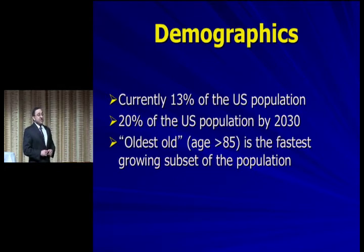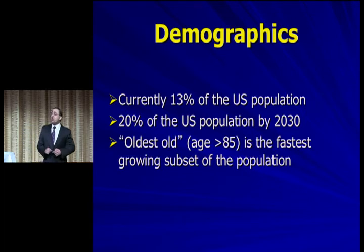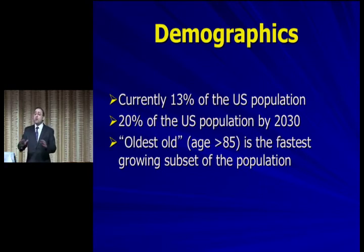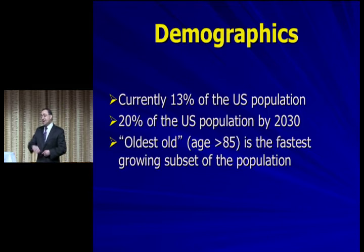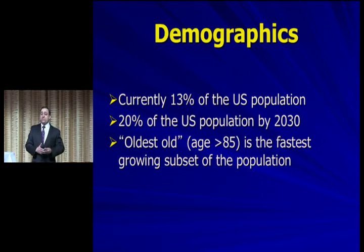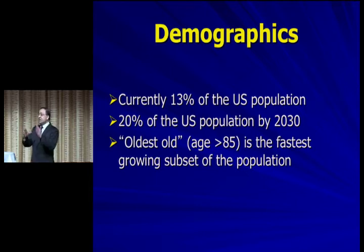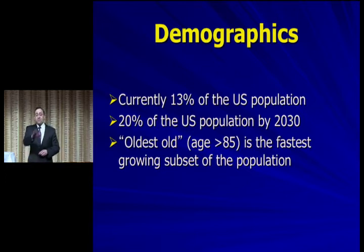Currently about 10 to 15, maybe as much as 20% of the U.S. population is over the age of 65. These statistics apply to every first world country — Europe, Canada, Asia, Australia, New Zealand. There's nothing magical about 65, but that's what most statistics use. We've all seen 40-year-olds with the physiology of a 70-year-old, and 70 to 80-year-olds out running marathons.